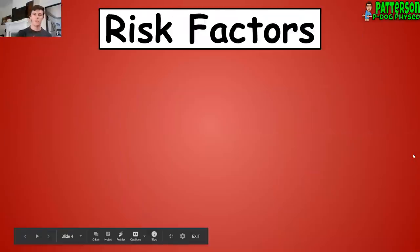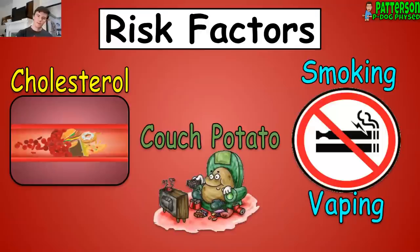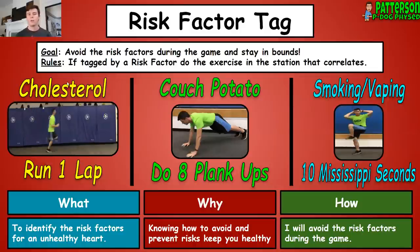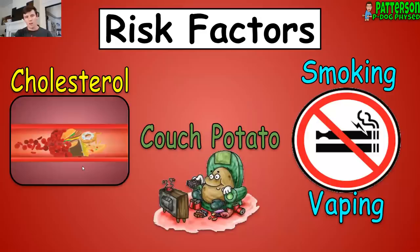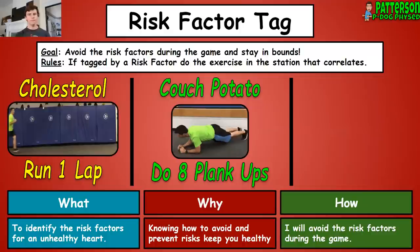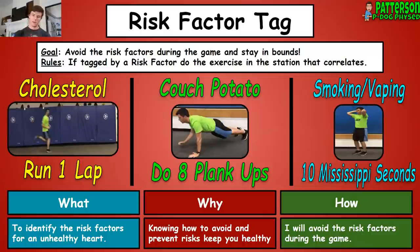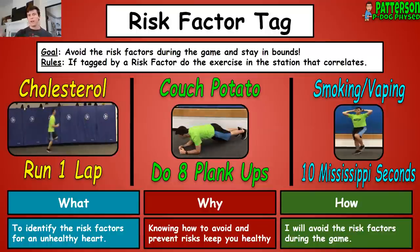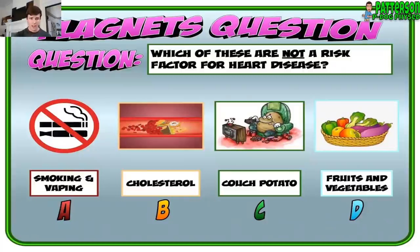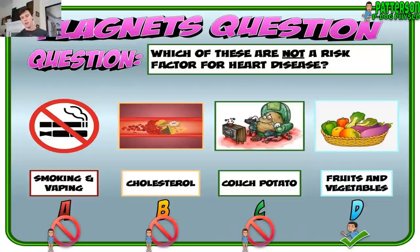For the next day — Risk Factor Tag — we go over cholesterol, couch potato, smoking and vaping. The color coordination is intentional: yellow noodle for cholesterol, run one lap if tagged; green for couch potato, do eight plank taps; blue for smoking and vaping, do elbows and knees for three seconds. I'm covering three risk factors for an unhealthy heart. Afterwards I can ask a quick question with an animation — which of these is not a risk factor for heart disease? Answer: eating veggies. The correct answer appears with an animation check.